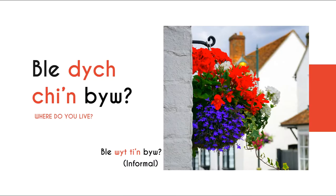To ask someone where they live in Welsh, you'd say, Ble dych chi'n byw? This, of course, is the formal way. And the informal way would be, Ble wyt ti'n byw? Let's try those again: Ble dych chi'n byw? And Ble wyt ti'n byw?